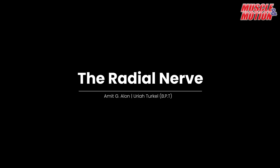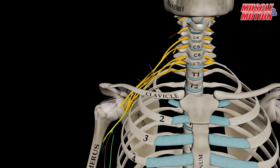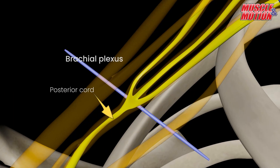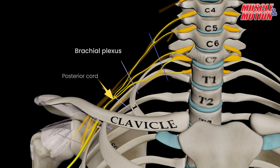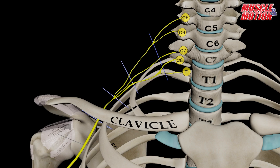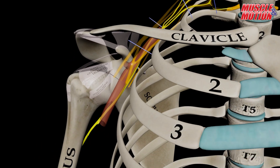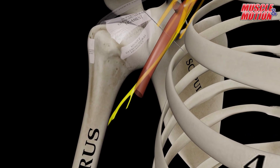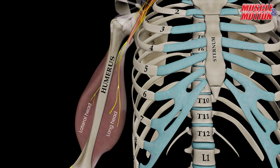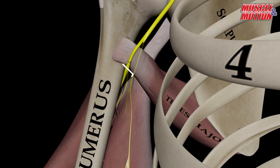The radial nerve arises from the posterior cord of the brachial plexus, with root contributions from C5 to T1. It travels posterior to the axillary artery, from where it gives motor branches to the long head and lateral head of the triceps brachii, and then enters the arm through the triangular interval.